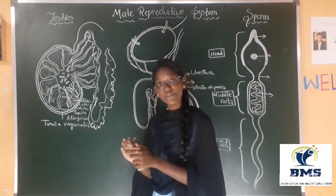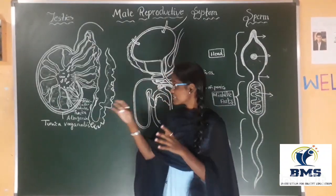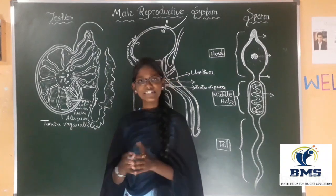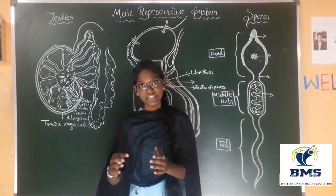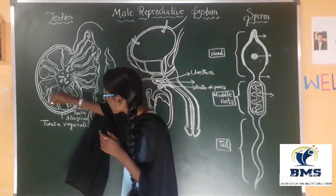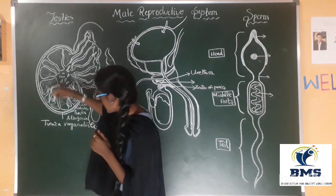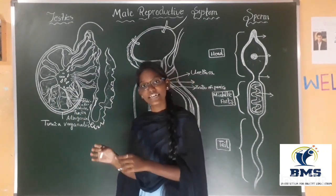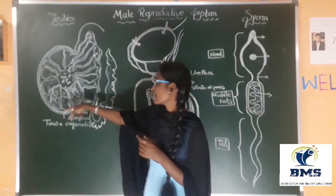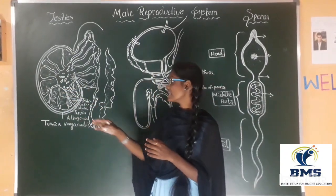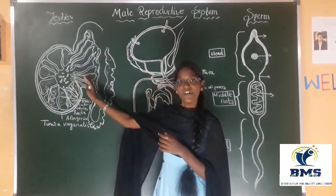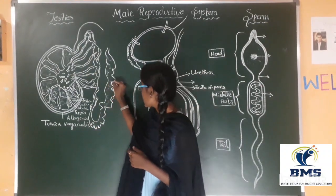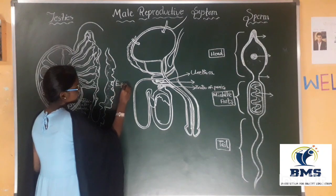These lobes are nearly 250 in each testis. And in these testicular lobes there will be 2 to 3 highly coiled seminiferous tubules. These seminiferous tubules are just like network-like structures with tubes, and in these the formation of the sperm takes place. After the seminiferous tubules comes the rete testis, and after that there will be vasa efferentia, followed by the epididymis.